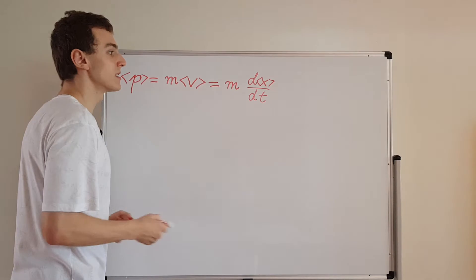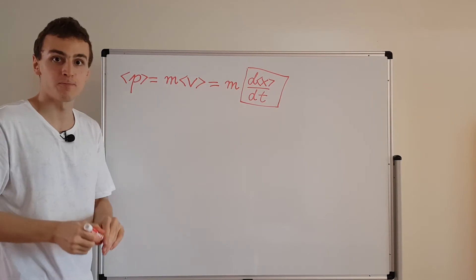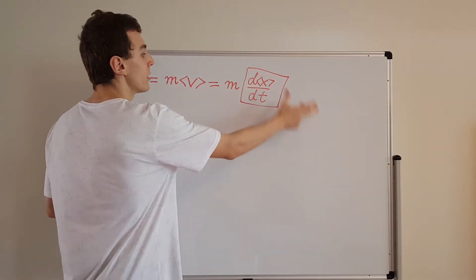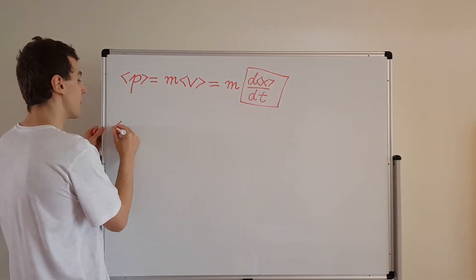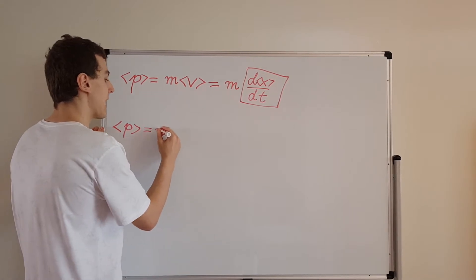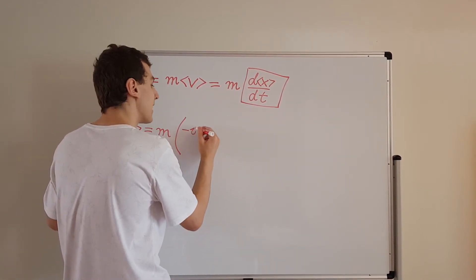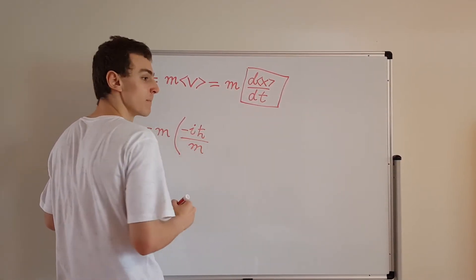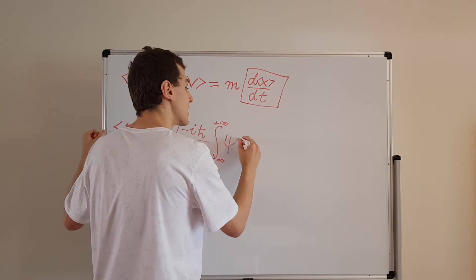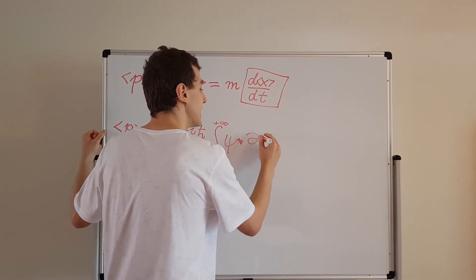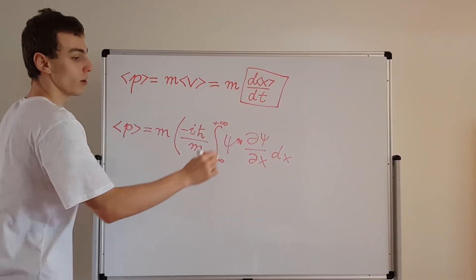In the previous video of this playlist, we actually derived an expression for the time derivative of the expectation value of x. I'm going to rewrite the expectation value of momentum in terms of that expression. So the expectation value of momentum is m times what we got in the previous video: minus i h-bar divided by m, times the integral from minus infinity to plus infinity of psi star times d psi dx, with respect to x.